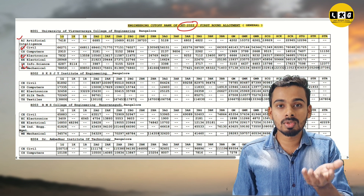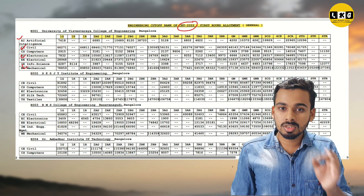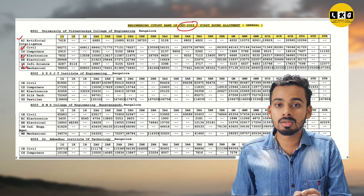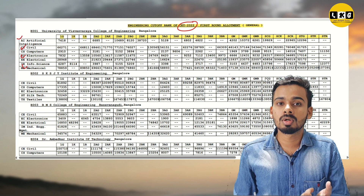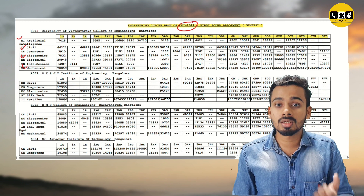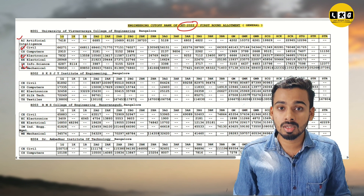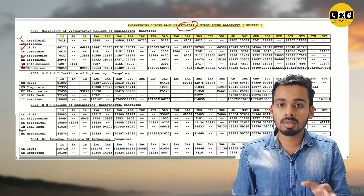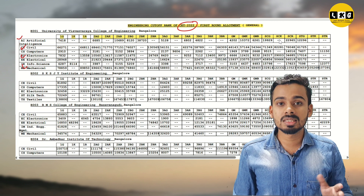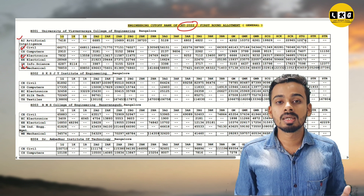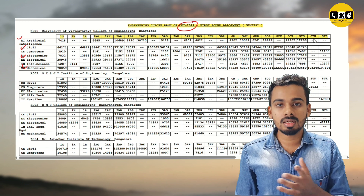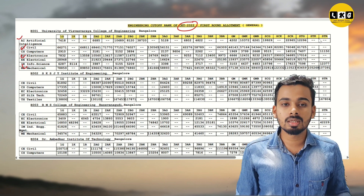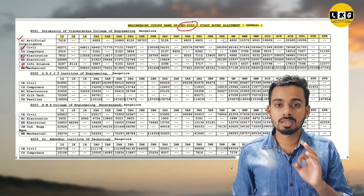General merit with rural certificate — if you have a rural certificate and belong to general merit, make sure to submit it. You have a chance to benefit from multiple categories. Submit all possible documents. SC, SC Kannada Medium, SC Rural Certificate, ST General, ST Kannada, ST Rural — these many categories are there. Submit all of them on a category-wise basis to maximize your opportunities.